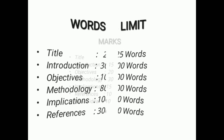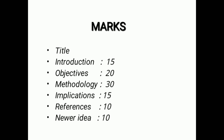Now we will see approximately how many marks ICMR allots to each section. These are not fixed marks but approximate: introduction can fetch a maximum of around 10 to 15 marks; objectives — 20 marks; methodology — 30 marks, carrying the most weight, covering study design, inclusion/exclusion criteria, data collection and analysis; implication — 15 marks; and references — 10 marks.